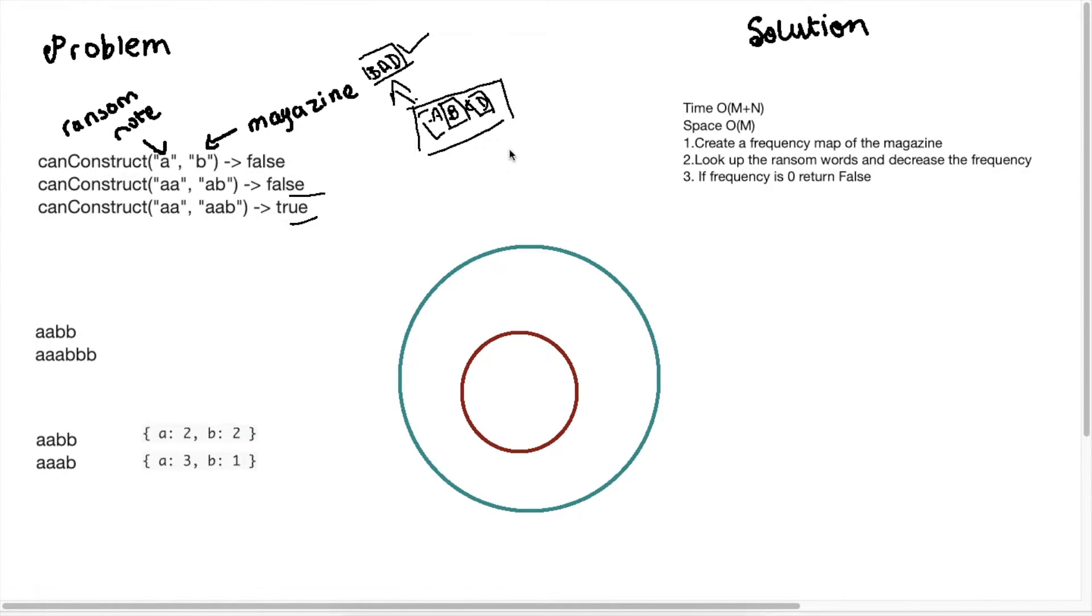Great so the first solution that can come to mind is a brute force one. If we're given these two strings we will go through each of the items and check if it is in the magazine or not. The first string is the ransom note and the second string is the magazine and yes this would work but the time complexity for this would be O of M times N.